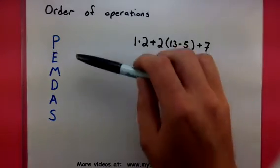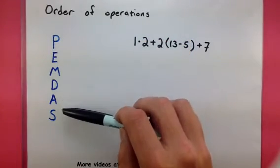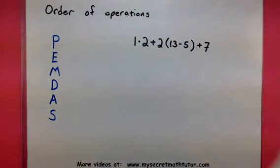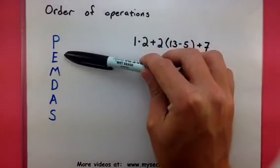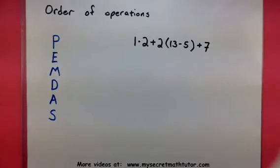A good mnemonic to memorize this is PEMDAS, or you can think of Please Excuse My Dear Aunt Sally. This will give us a hint as to what we should do first. This stands for parentheses, exponents, multiplication, division, addition, and subtraction.